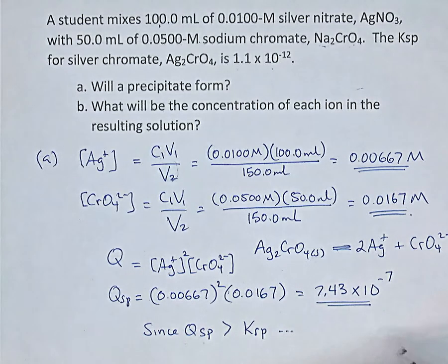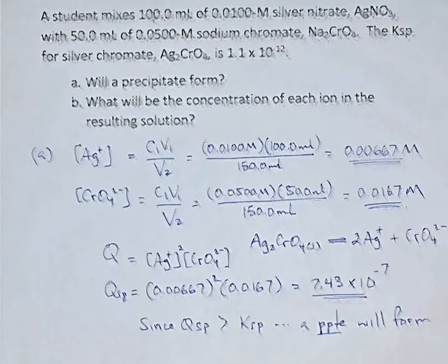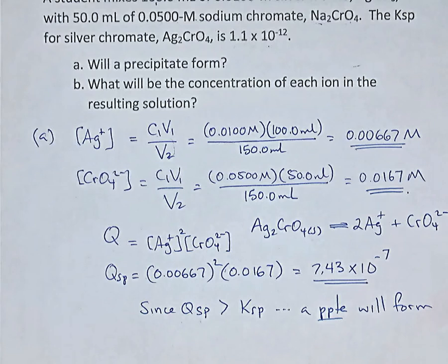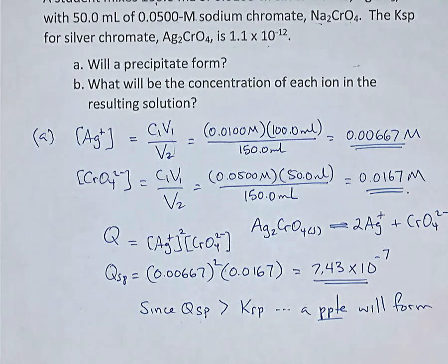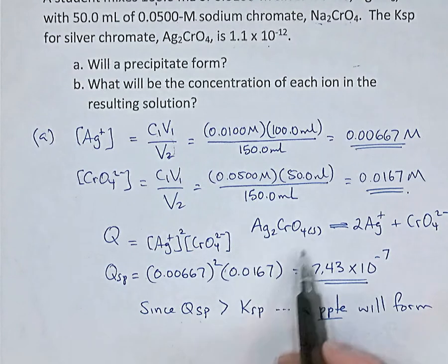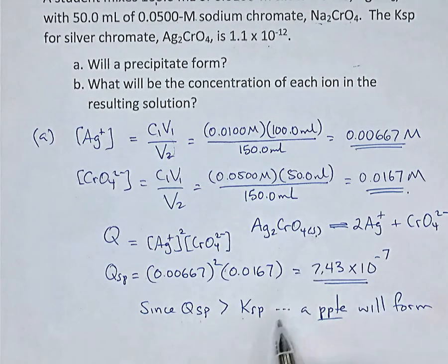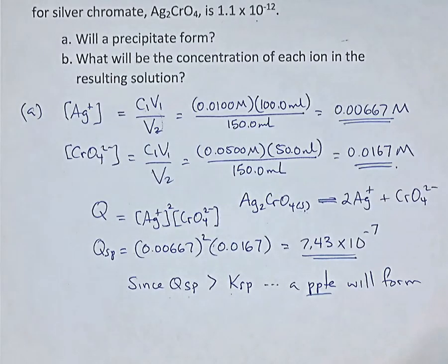The KSP value is 1.1 × 10⁻¹². Even though QSP is very small, it is much larger than KSP. So since QSP is bigger than KSP, the solution is supersaturated and a precipitate will form. For reference: if QSP equaled KSP, the solution is perfectly saturated and no precipitate forms. If QSP were less than KSP, the solution is not yet saturated and no precipitate forms. But when Q is bigger than K, the equilibrium shifts backwards — forming solid silver chromate — so yes, we get a precipitate.